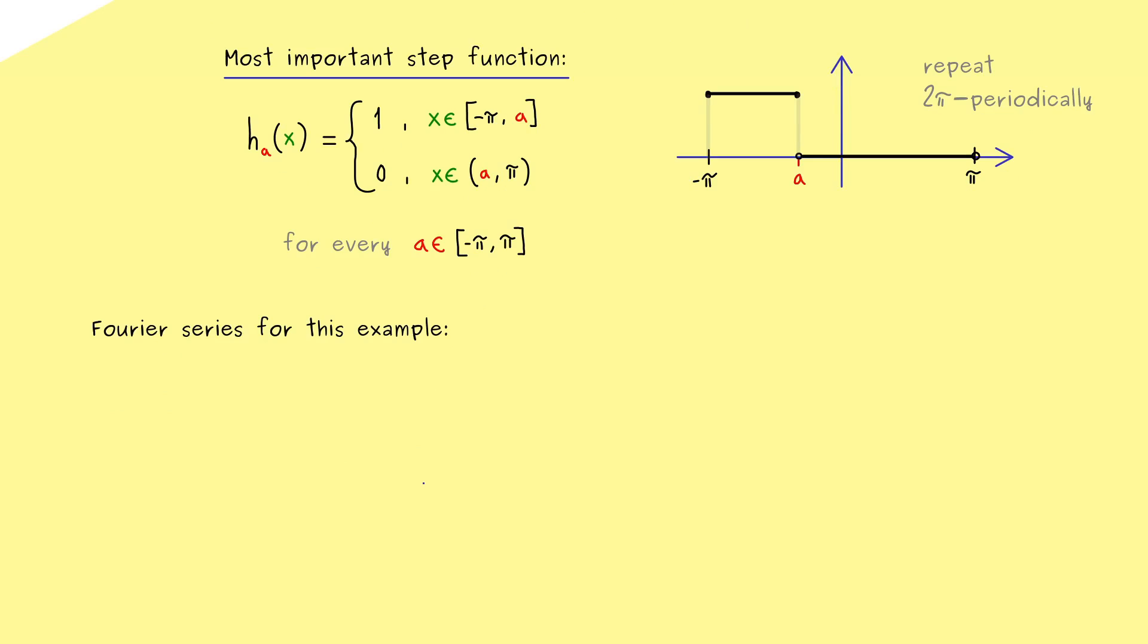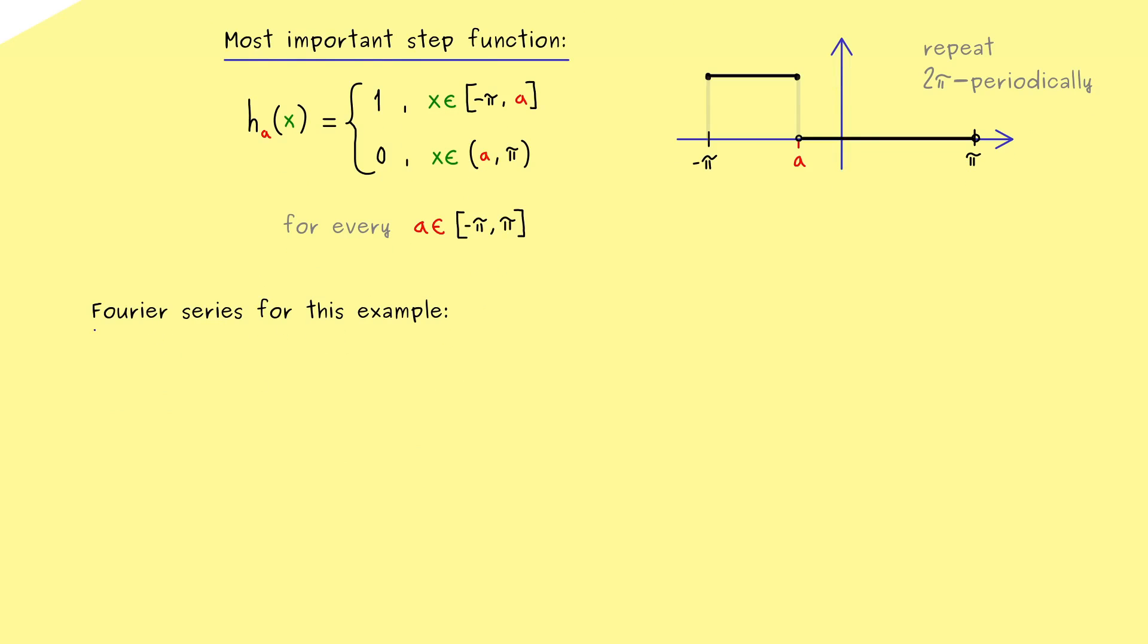And that's it. That's the whole definition we need here. And please note that this definition works for every a in the interval minus π to π. In other words with this example we cover all examples where a lies somewhere here in the middle. And the surprising thing is that it will turn out that this is all we need to show Parseval's identity for all L2 functions. Indeed there is some strong theory in between. But in the end the only calculation we have to do is for this example. Therefore this is exactly what we will do now. Let's calculate the Fourier series for this example. This means we have to calculate the coefficients c_k.